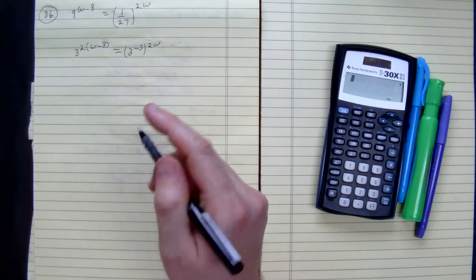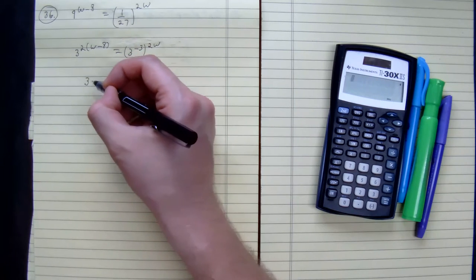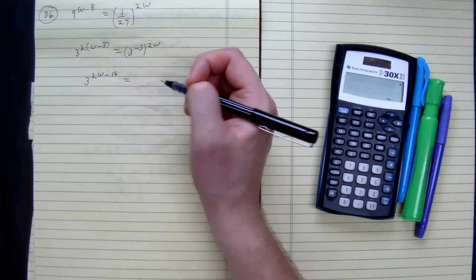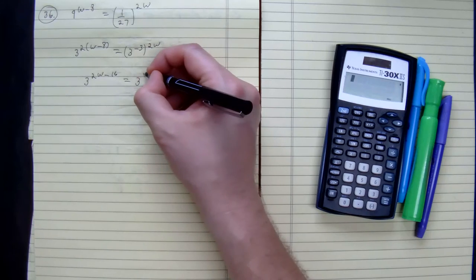From here, we have a common base now. Let's just simplify everything. We get 3 to 2w minus 16 equals 3 to the negative 6w.